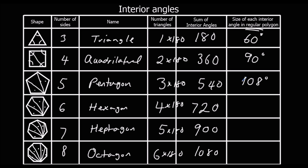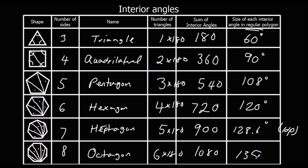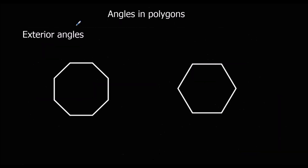720 divided by 6 is 120 degrees. The heptagon is a tough one, so we definitely use a calculator. 900 divided by 7 is 128.6 to one decimal place. And an octagon: 1080 divided by 8 gives us 135 degrees.